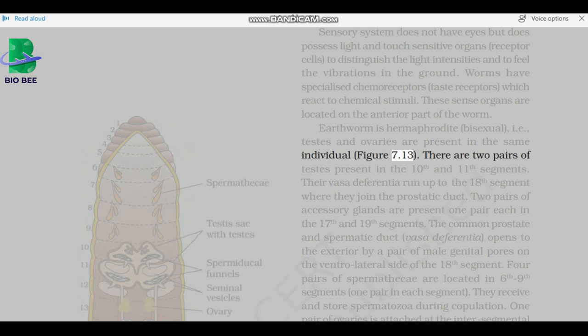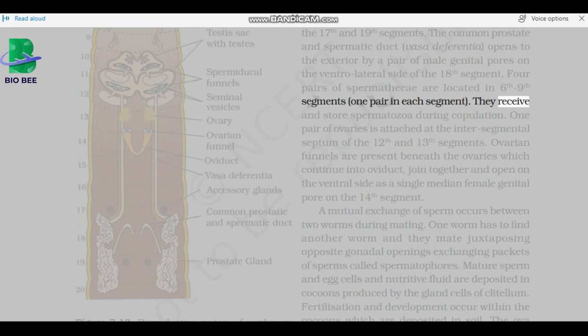There are two pairs of testes present in the 10th and 11th segments. Their vasa deferentia run up to the 18th segment where they join the prostatic duct. Two pairs of accessory glands are present, one pair each in the 17th and 19th segments. The common prostate and spermatic duct, vasa deferentia, opens to the exterior by a pair of male genital pores on the ventral lateral side of the 18th segment. Four pairs of spermathecae are located in 6th to 9th segments, one pair in each segment. They receive and store spermatozoa during copulation.